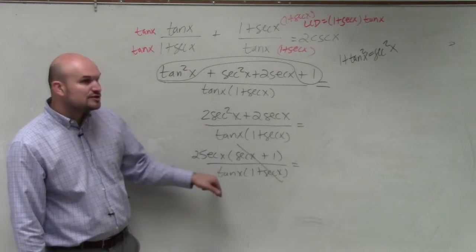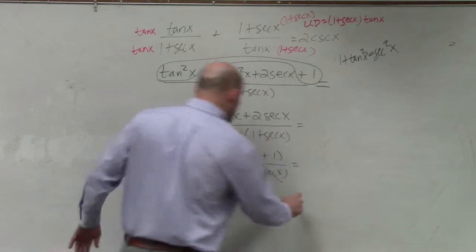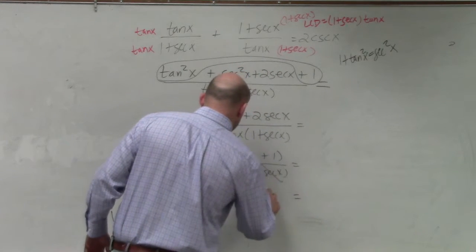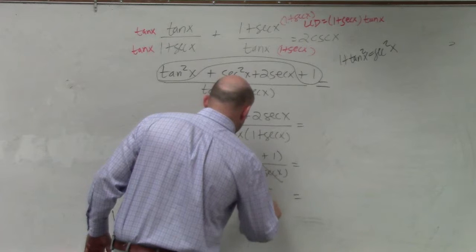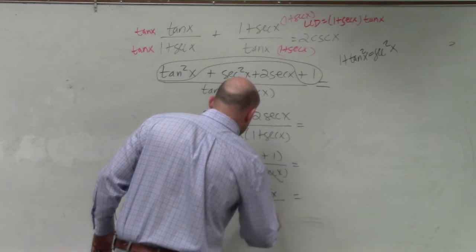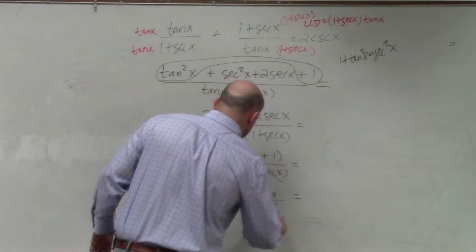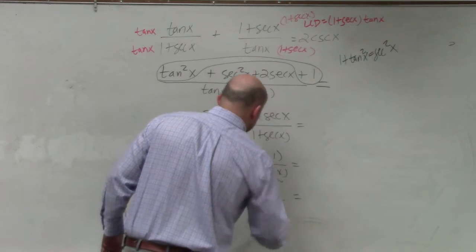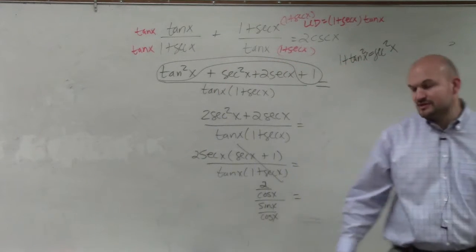Now I'm left with 2sec x over tan x. We might want to write that out as 2/(cos x) divided by sin x/(cos x). And guys, if you notice here, if I multiply by the reciprocal on the top and bottom, the cosines will divide out,